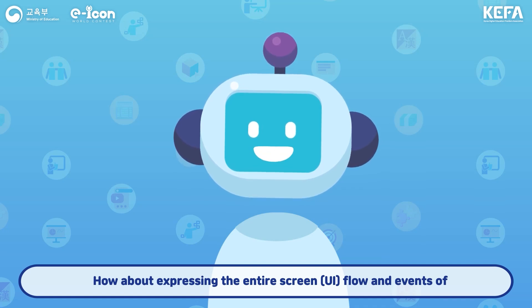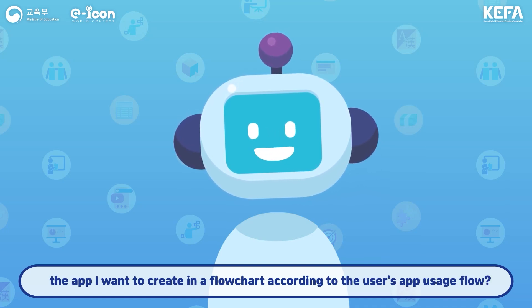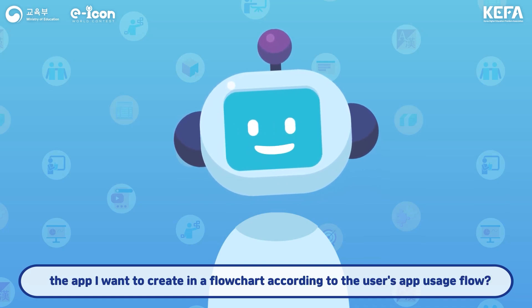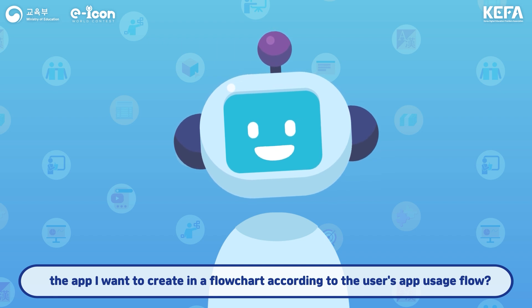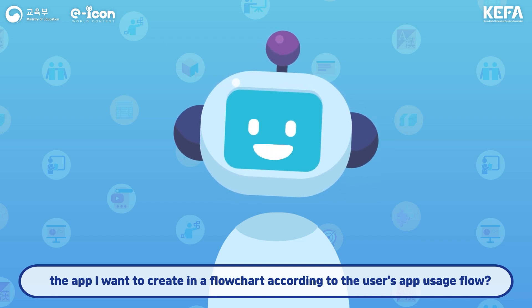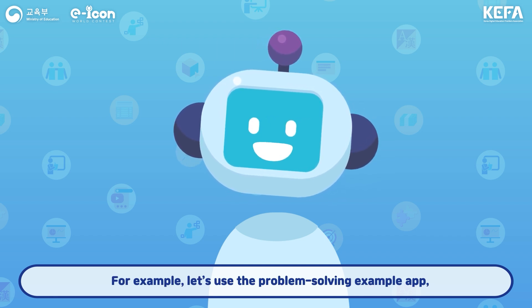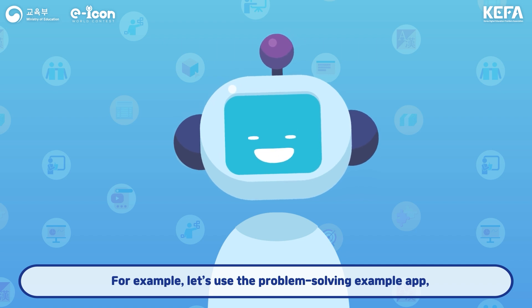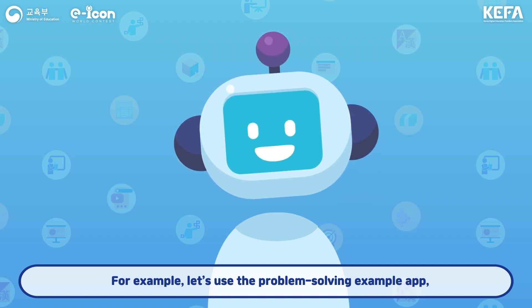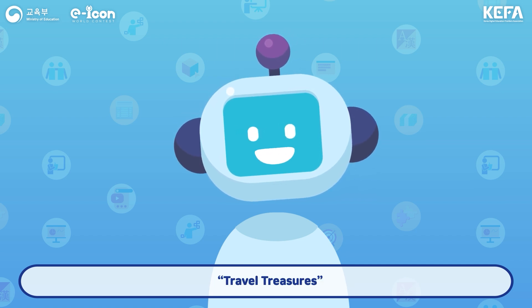How about expressing the entire screen flow and events of the app you want to create in a flowchart, according to the user's app usage flow? For example, let's use the problem-solving example app, Travel Treasures.